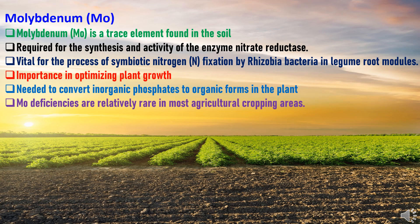Molybdenum is another important micronutrient, a trace element found in soil. It is required for the synthesis and activity of the enzyme nitrate reductase. Molybdenum aids in the formation of legume nodules, which is very important for biological nitrogen fixation. It is vital for the process of symbiotic nitrogen fixation by Rhizobia bacteria in legume root nodules, and it is needed to convert inorganic phosphates to organic form in the plant. Fortunately, molybdenum deficiencies are relatively rare in most agricultural cropping areas, so it does not have much impact on crops.